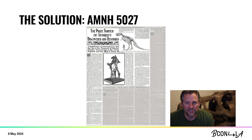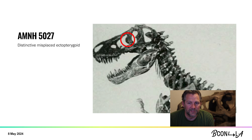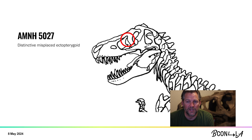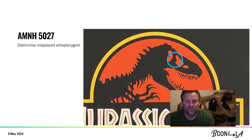5027 was discovered in 1908 and went on public display a few years later. T-Rex specimens differ widely in their distinctive shapes and 5027 is very recognizable. Its silhouette is also distinctive for the displaced ectopterygoid that you see forming a bump here in the large antiorbital fenestra. That bump is still clearly visible even in the Jurassic Park logo.